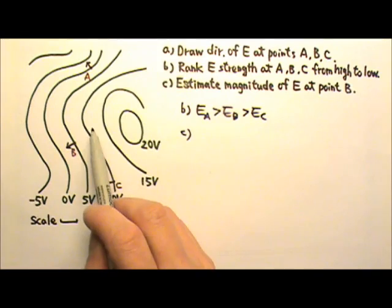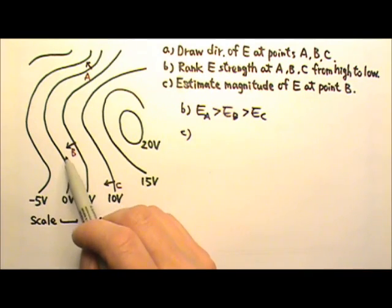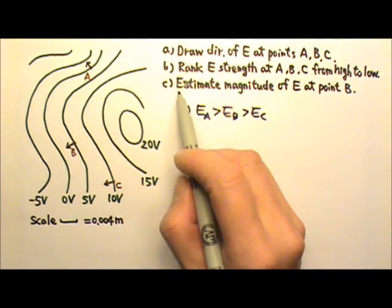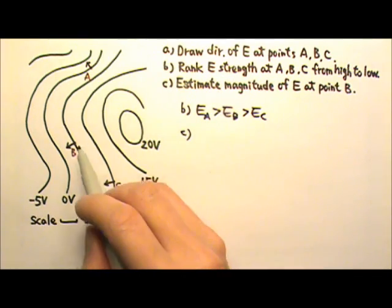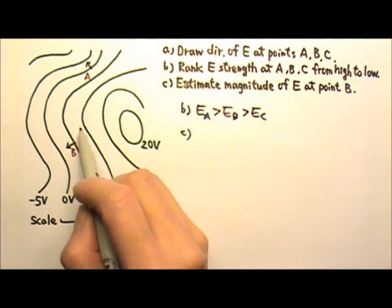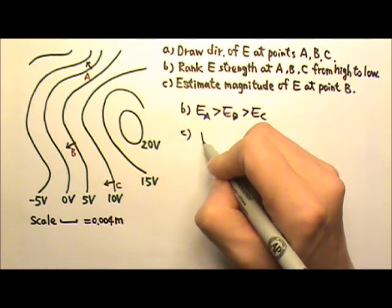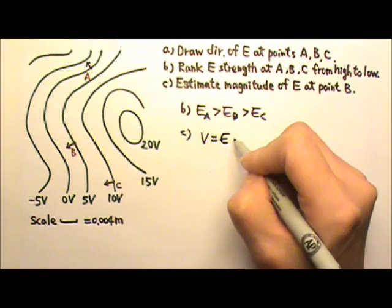The equipotential surfaces are kind of parallel to each other and almost equal distance apart. So if we just need to estimate the magnitude of the electric field over here, we can treat this region as a uniform electric field, which means that we can use V equals ED.